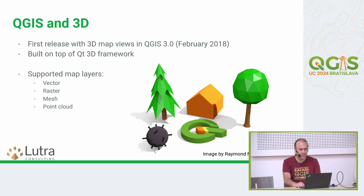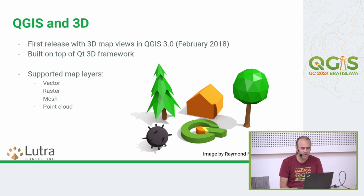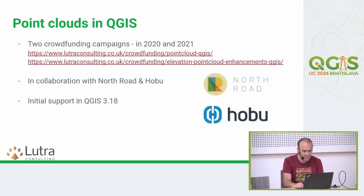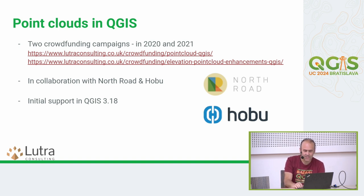3D views in QGIS were introduced in QGIS 3 back in 2018 and it's built on top of the QT3D framework, which we may eventually start moving away from. It currently supports displaying vector, raster, mesh, and point cloud layers in a 3D view. Point clouds were introduced back in 2020 and 2021. We did two successful crowdfunding campaigns — Lutra Consulting in collaboration with Northroad and Hobu — and the first version with point cloud support was 3.18.